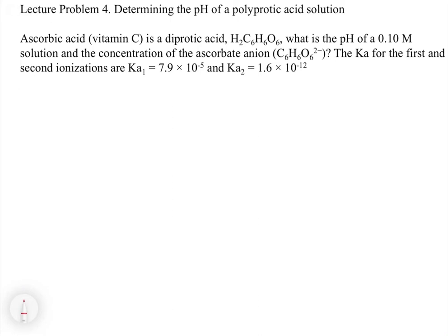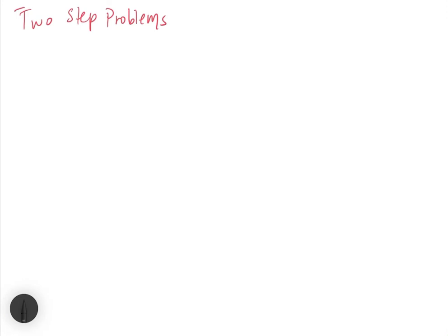Here is the calculation problem: determining the pH of a polyprotic acid solution. Ascorbic acid is a diprotic acid, H2C6H6O6. What is the pH of a 0.1 molar solution and the concentration of the ascorbate anion, C6H6O6 2-? We're given Ka1 and Ka2. We approach polyprotic acid problems as two-step problems — we handle each acidic step in a stepwise fashion.